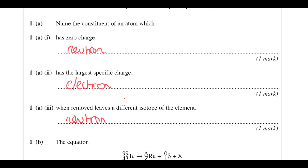Removing an electron creates an ion, removing a proton changes the element, and changing the number of neutrons changes your isotope.